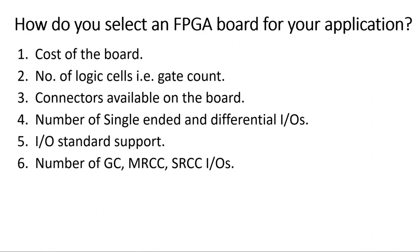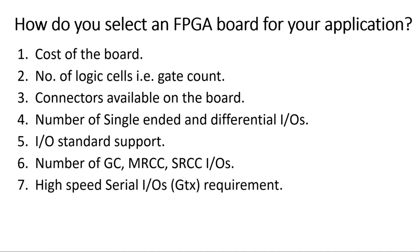The sixth point is the number of GC, MRCC, and SRCC IOs. GC stands for Global Clock pin — there are specific global clock pins on each FPGA device from where the clock can be routed to any clock region. MRCC stands for Multi-Region Clock Capable IO — from MRCC IO pins, the clock can be routed to a few clock regions but not all. SRCC is a Single Region Clock Capable pin — if a clock is applied at this pin it can only be routed to a single clock region inside the FPGA device.